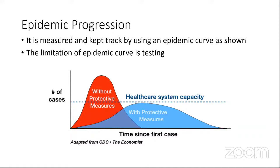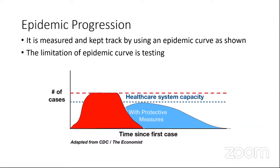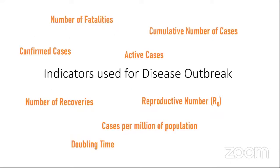So how do we visualize the epidemic, specifically COVID-19, in a specific region such as the Philippines or the National Capital Region? We keep track using an epidemic curve, which relies on the number of cases — how many cases are added or how many cases in total on a specific day. The limitation of the epidemic curve is testing: we cannot observe the true curve if we are hindered by a limited testing capacity.